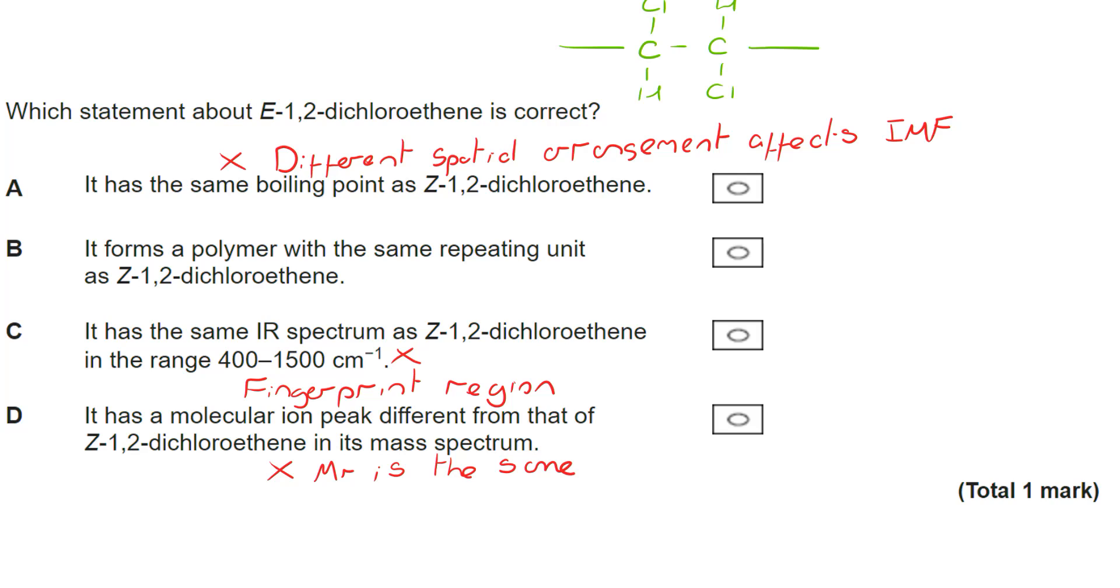It forms a polymer with the same repeating unit as Z-1,2-dichloroethene. Now I've drawn up at the top here my repeating unit. And I think the key thing to remember here is once you get the repeating unit, the double bond has been broken. So we do now have free rotation. So for that reason, the repeating unit is identical.